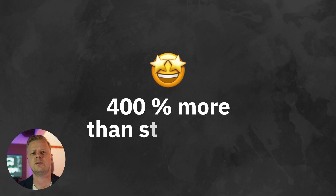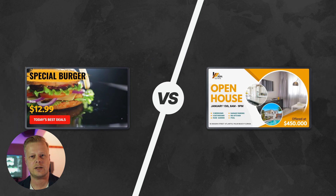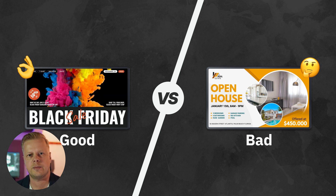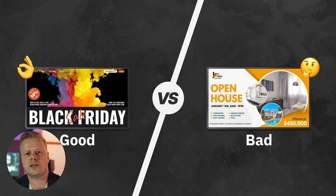One of the biggest advantages of digital signage over print media is the ability to utilize dynamic content — and you just have to do this. At a minimum, because dynamic signs capture the attention of your audience 400% more than static ones. So if you are not going to use video and animation in your layouts, you simply don't need digital signage.